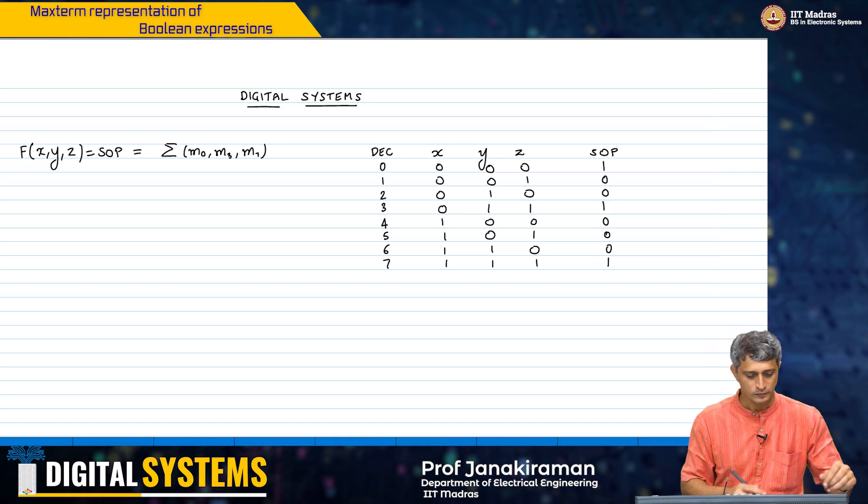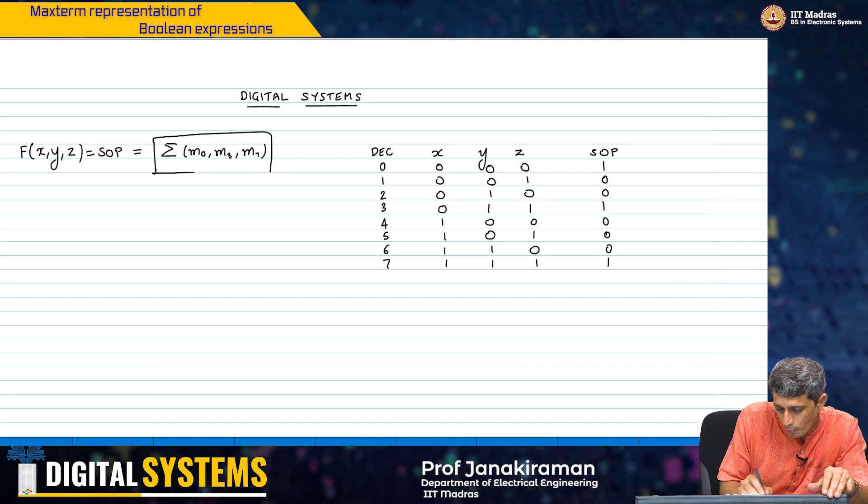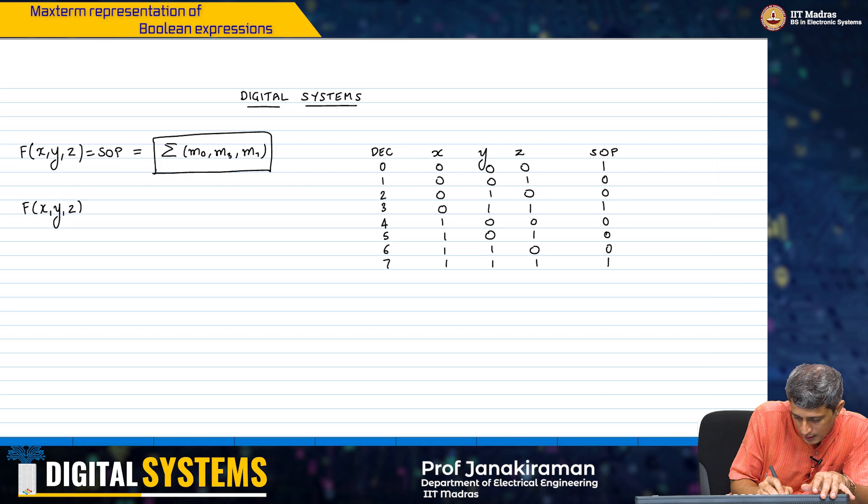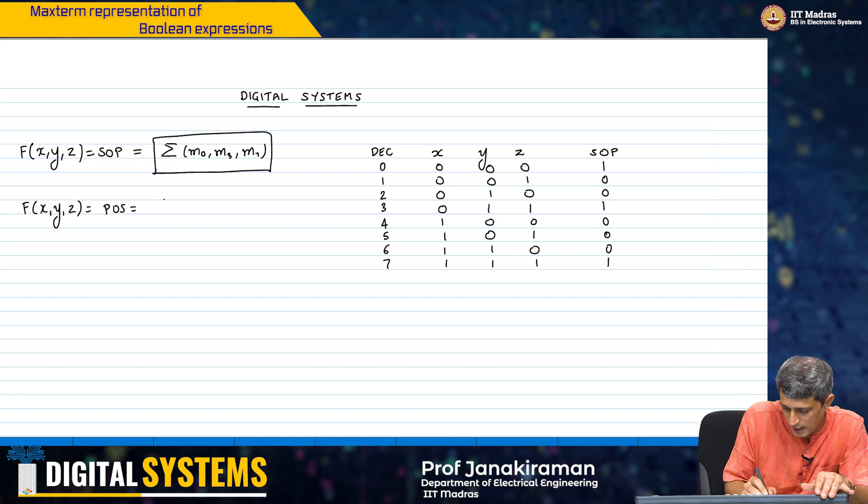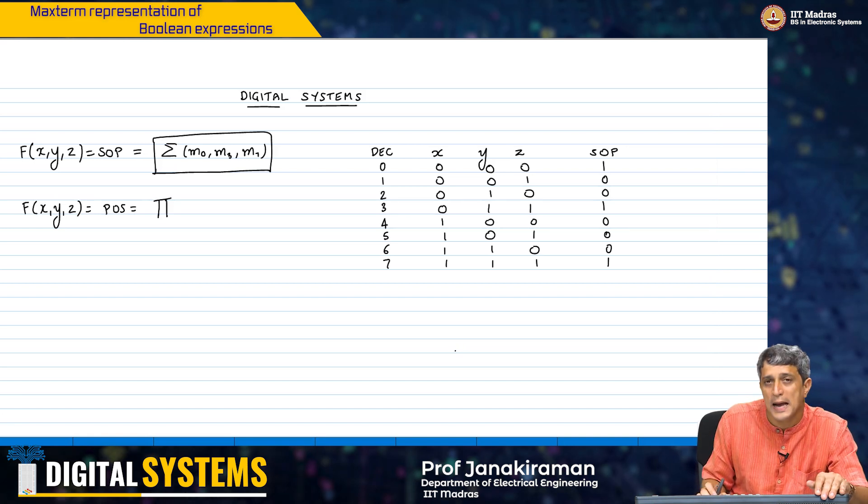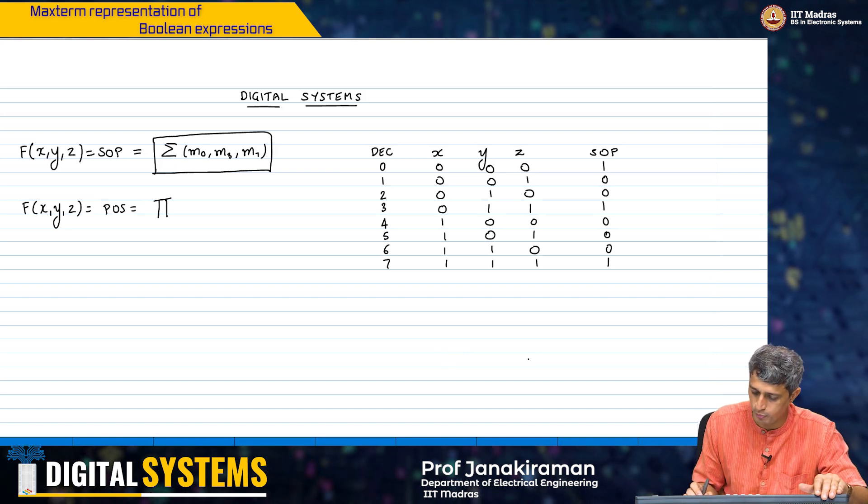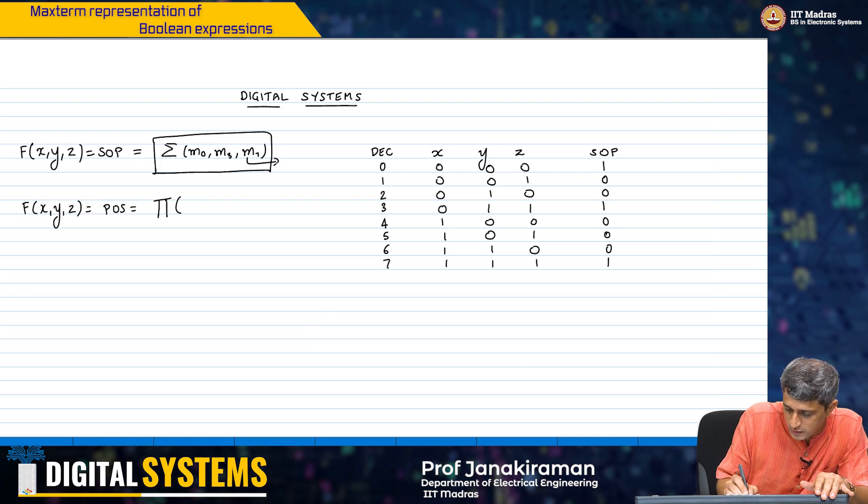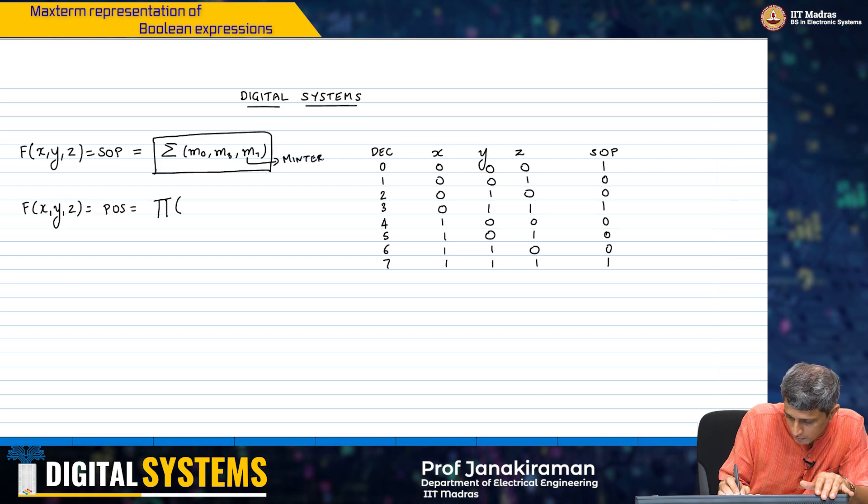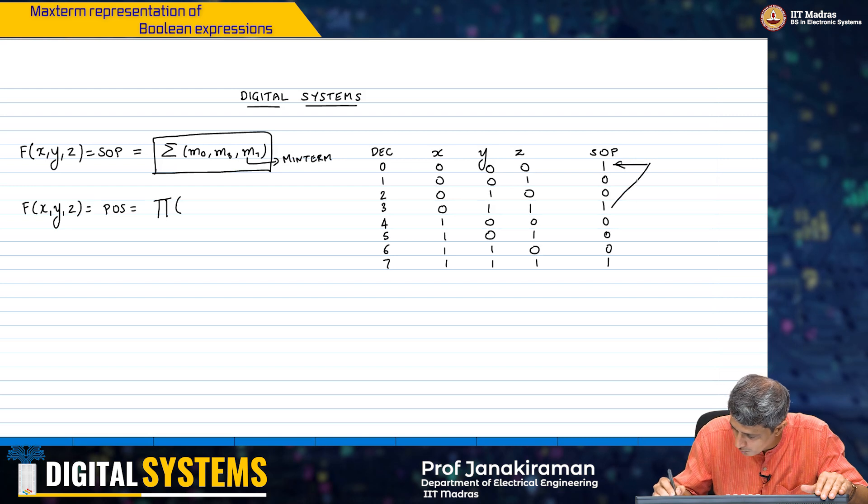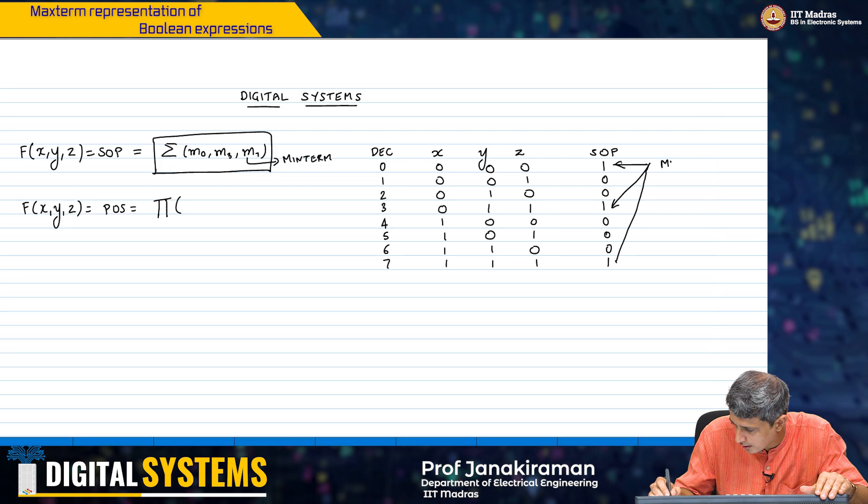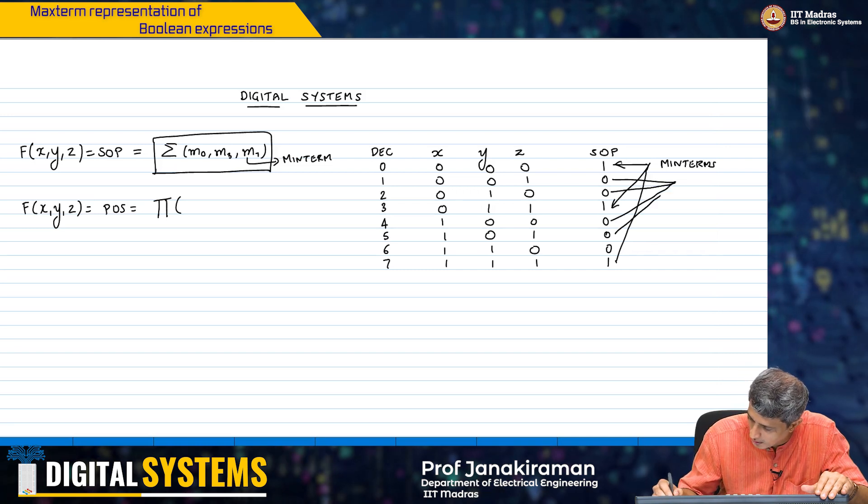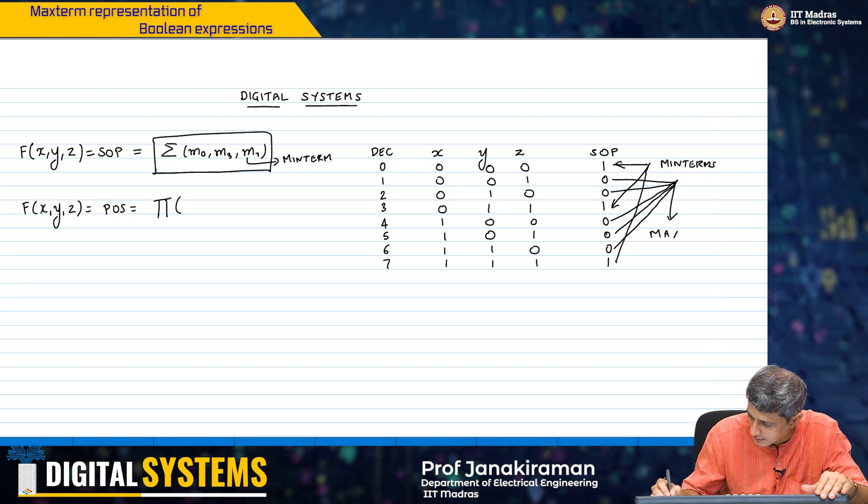This representation here allowed a very compact representation instead of writing a very large truth table. Alternately, you can also write this in the product of sum form and simply say that this is the product of the max terms of the remaining numbers. For example, small m we are going to use to represent a min term. These three are basically min terms. The remaining numbers here are what you call the max terms.